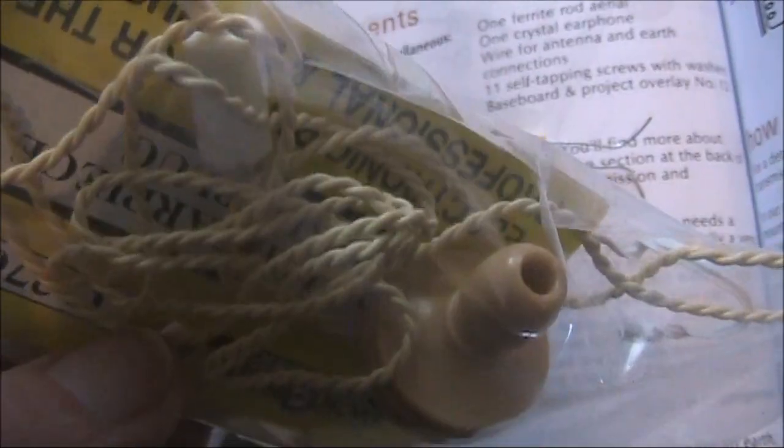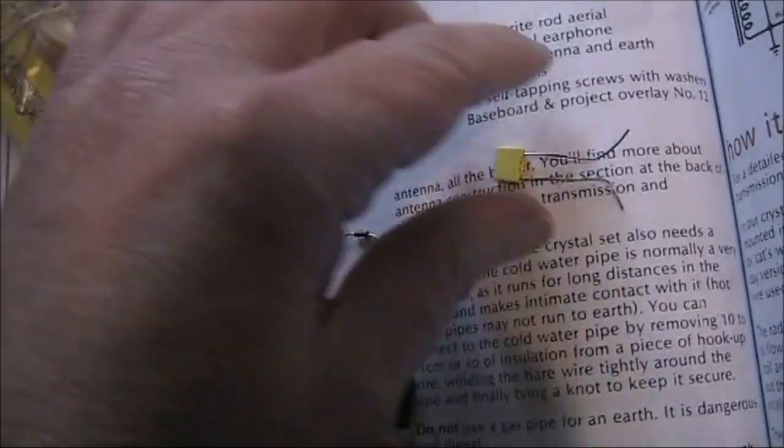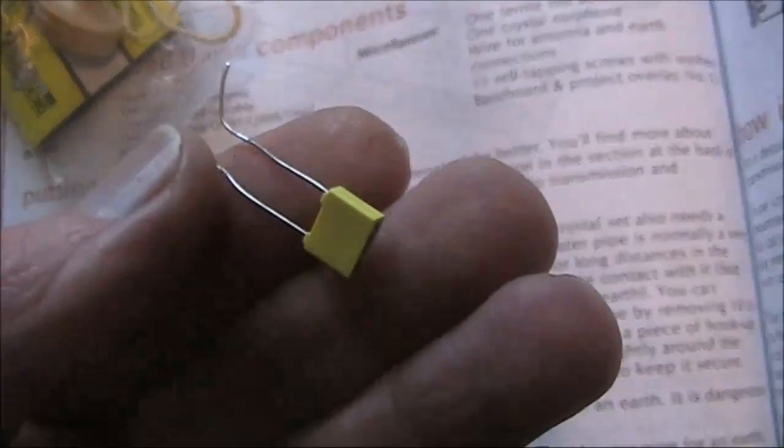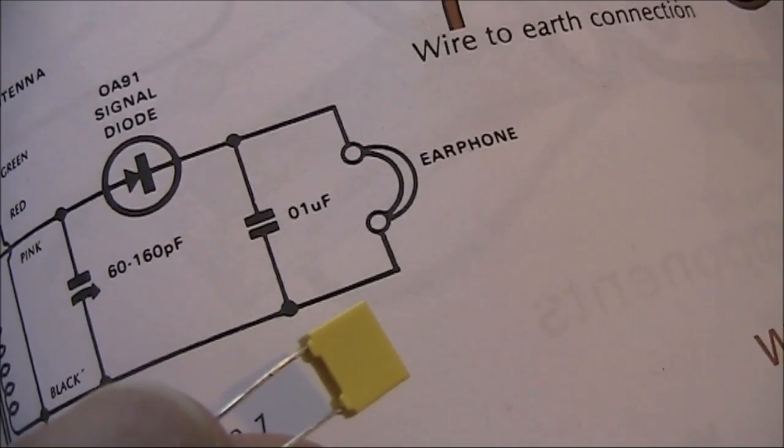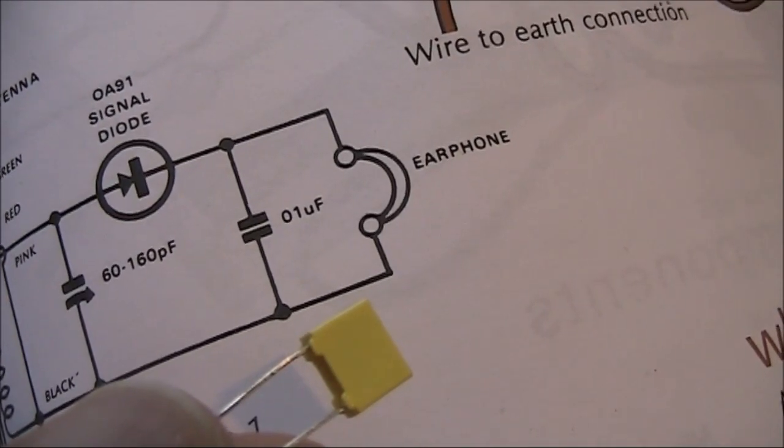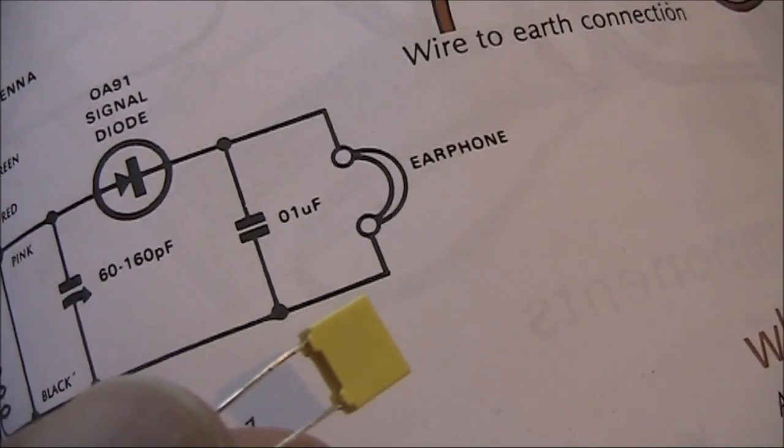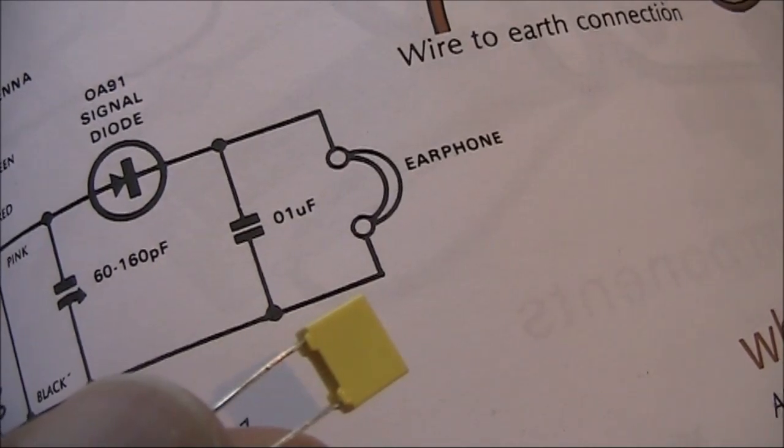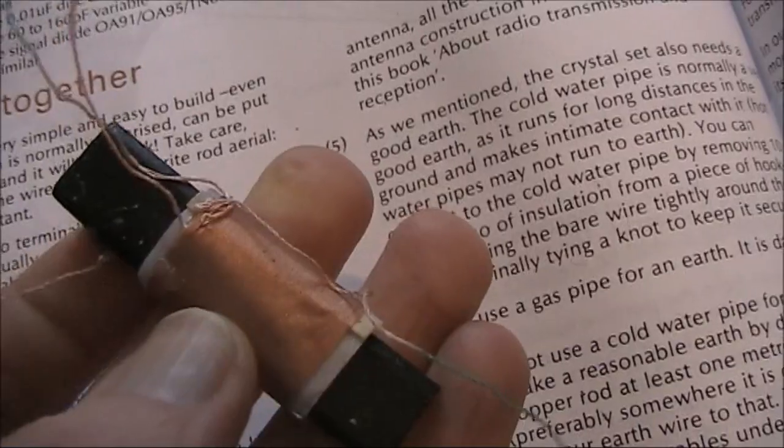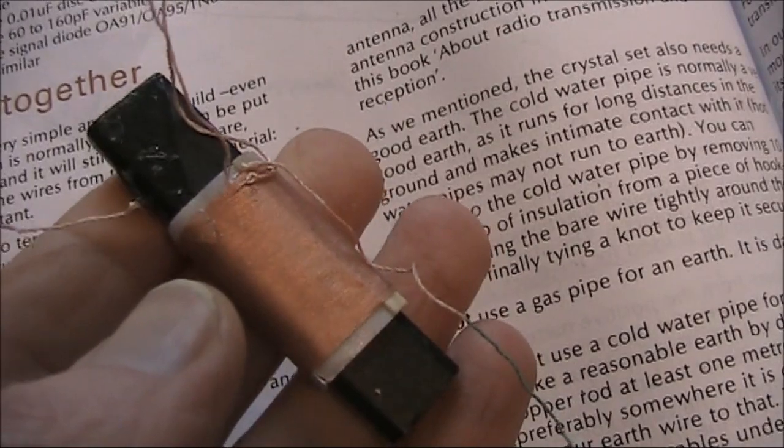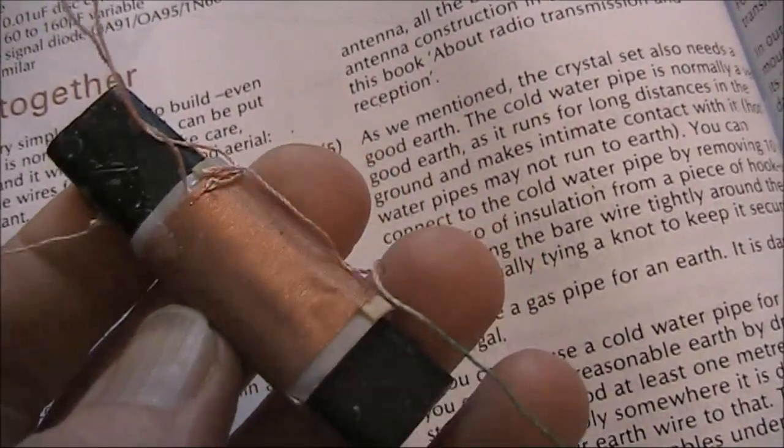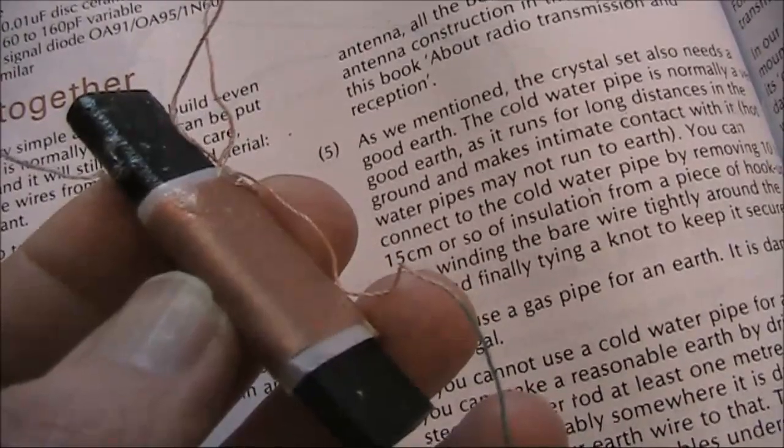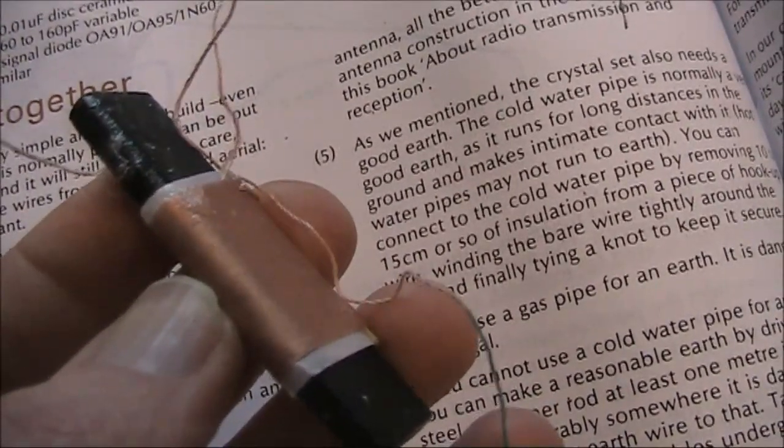Also in this circuit is a capacitor that is connected across the crystal earpiece to shunt any unwanted radio frequency signals to earth. The most critical part in building the set is making sure the connections for the coils are correct. If they're not, then it won't function.